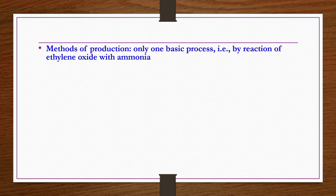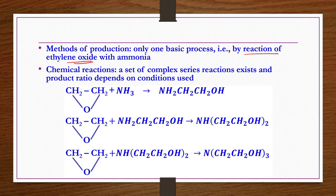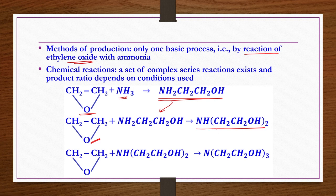The only basic production process is reaction of ethylene oxide and ammonia. A set of complex series reactions exists and the product ratio depends on conditions. One mole of ethylene oxide reacts with ammonia to give monoethanolamine; monoethanolamine reacts with one more mole of ethylene oxide to give diethanolamine; diethanolamine reacts with another mole to give triethanolamine. All three products form simultaneously because it is a series reaction.